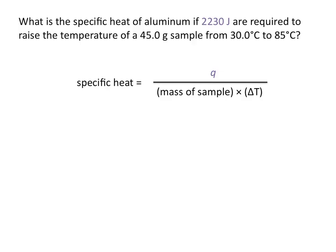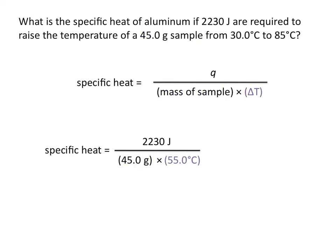Q is equal to 2,230 joules as given in the problem. We divide that by the mass of the sample, 45 grams, and also divide by delta T, which is 55 degrees Celsius. None of our units cancel, and that's alright, because specific heat values are normally given in joules per gram degree Celsius. When you punch these numbers into your calculator, you should get 0.900 joules per gram degree Celsius.